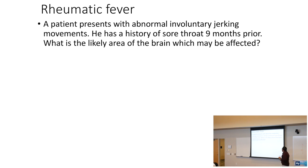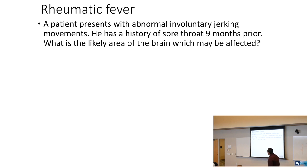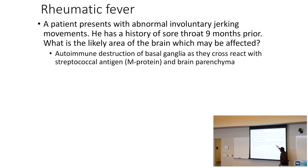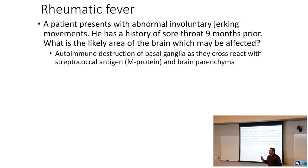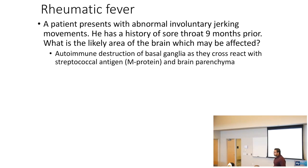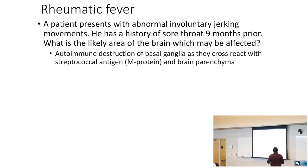A patient with abnormal involuntary jerking movements and a history of sore throat nine months prior has Sydenham's chorea, due to autoimmune destruction of the basal ganglia. The mechanism involves cross-reactivity with the M protein and brain parenchyma. Sydenham's chorea is one of the Jones criteria for rheumatic fever.